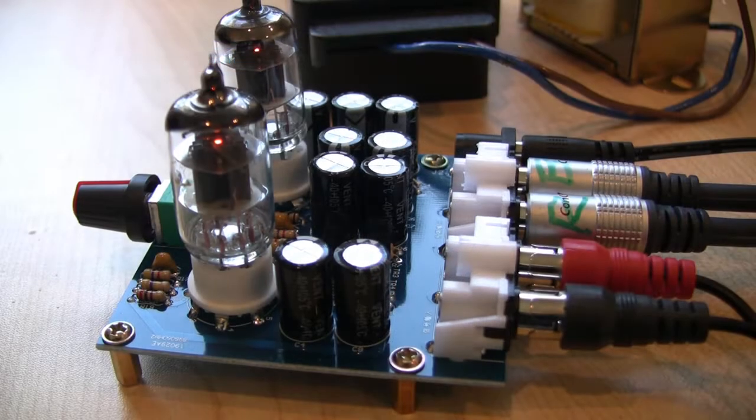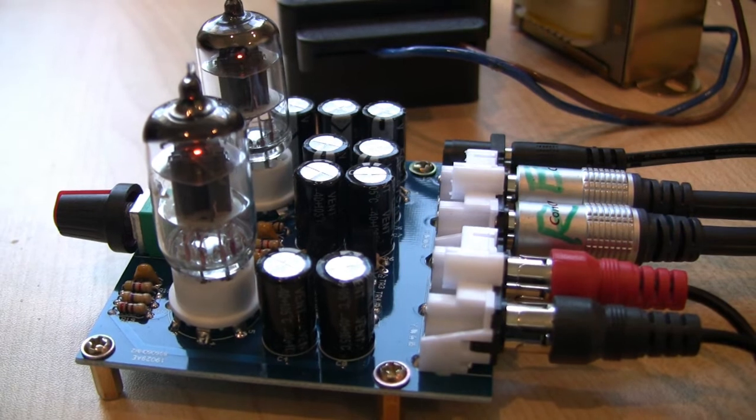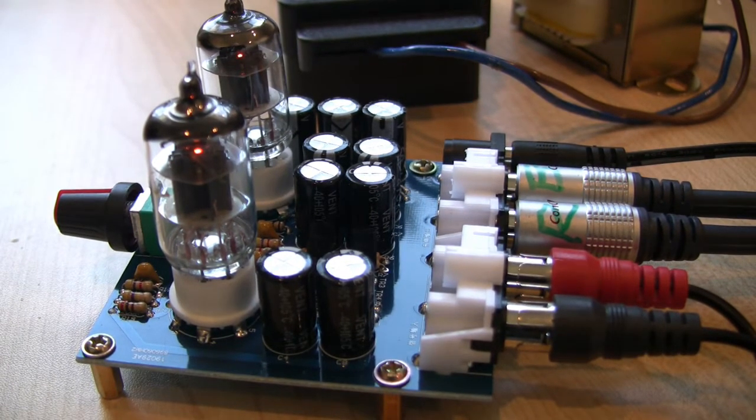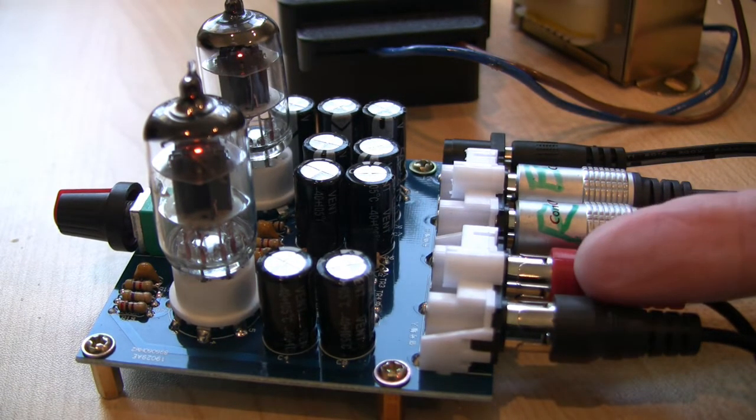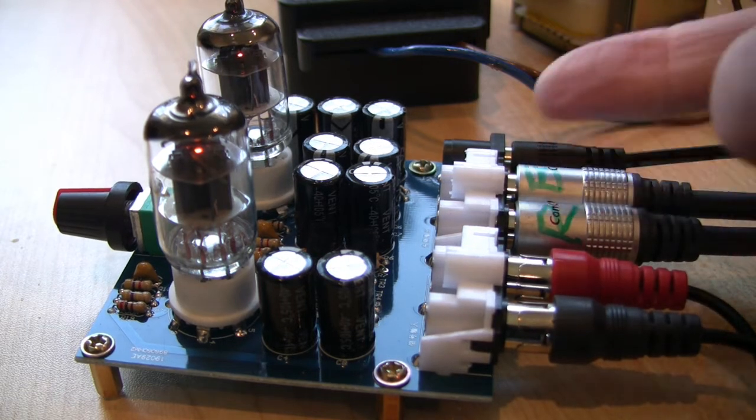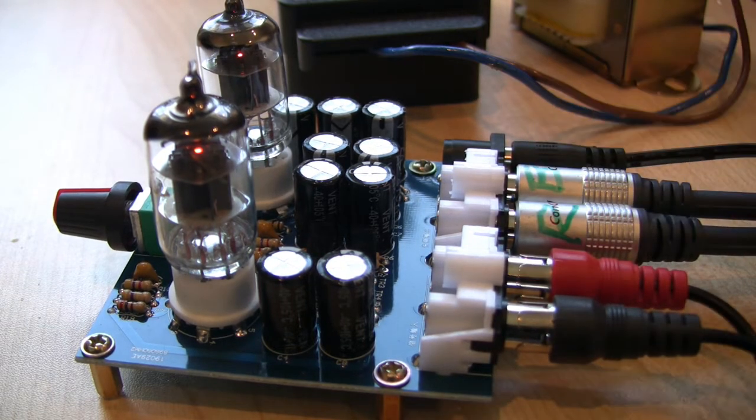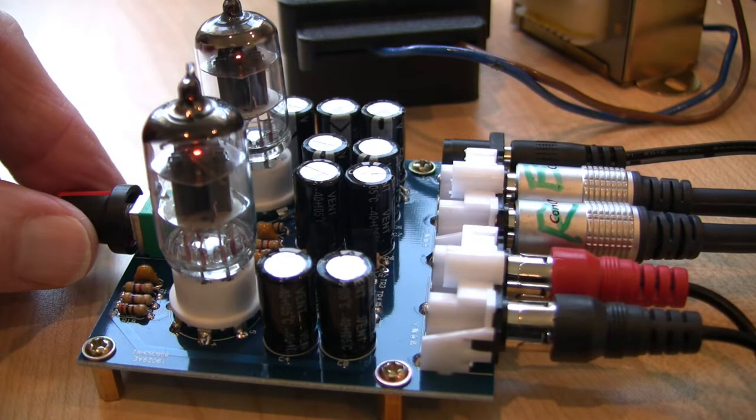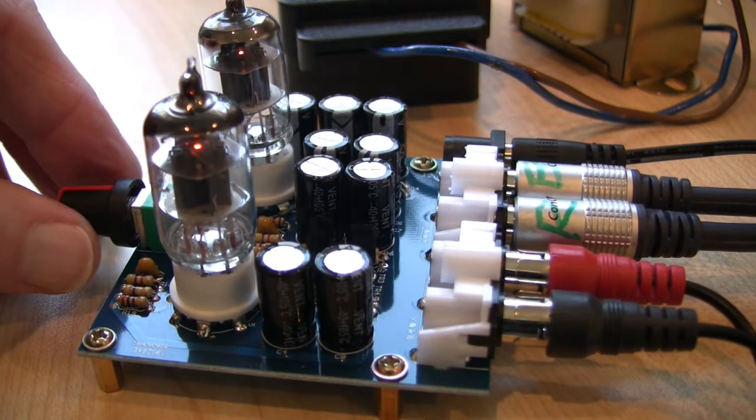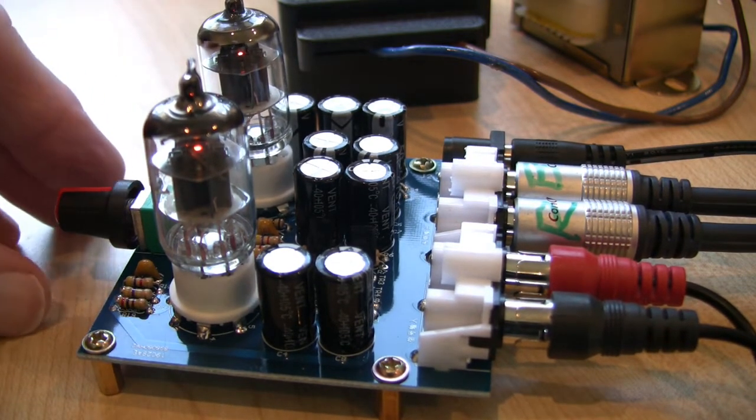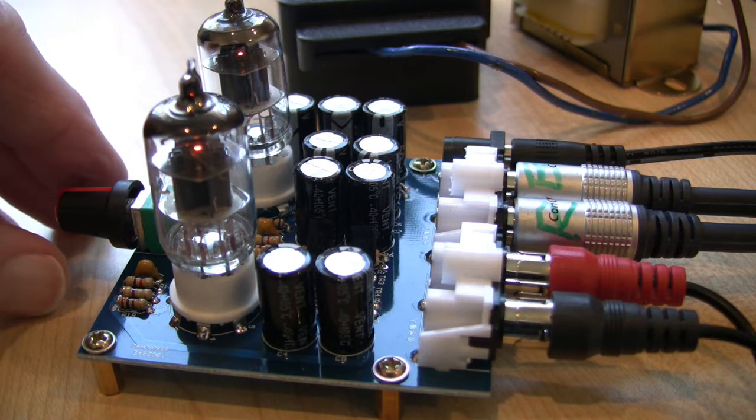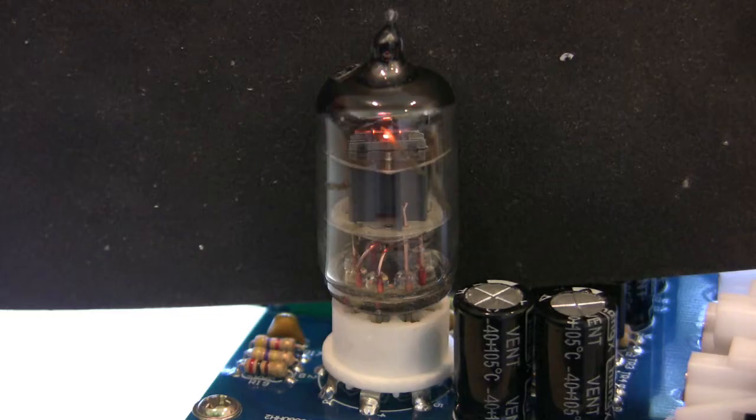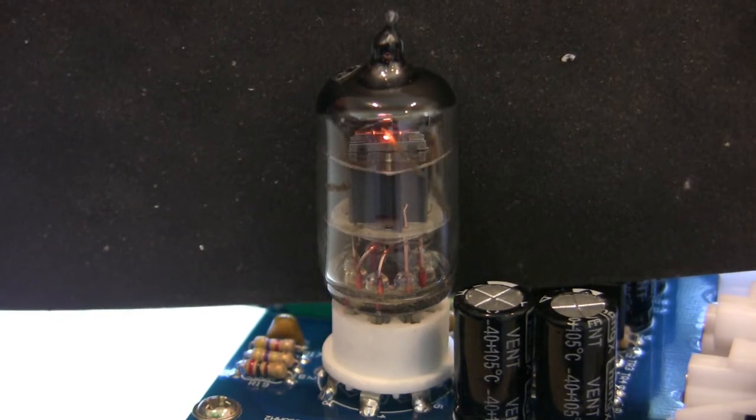This is what it looks like assembled and it's simply a case of input here, output here, AC volts here, and an on off. It does actually have, I should say it's a potentiometer for the volume and it also has a click switch to turn the thing off.